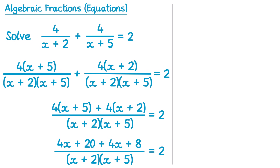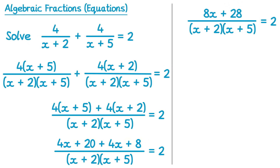Next we need to simplify the numerator. On the top we have 4x plus 4x, which is 8x. And then we also have 20 plus 8, which is 28. Next we're going to multiply both sides of this equation by both of those brackets on the denominator — so by x plus 2 and x plus 5. This will clear the fraction on the left hand side to give us 8x plus 28, but on the right hand side we'll have 2 lots of x plus 2, x plus 5.